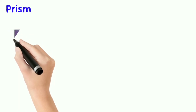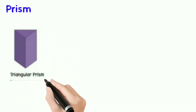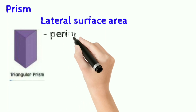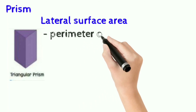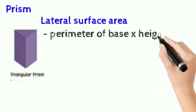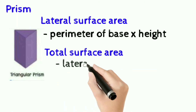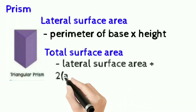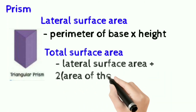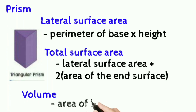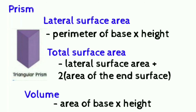Prism: lateral area of the prism is perimeter of the base into height of the prism. Total surface area of the prism is lateral surface area plus 2 into area of the end surface. Volume of the prism is area of the base into height of the prism.